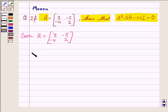Therefore, A squared is [3, -5; -4, 2] times [3, -5; -4, 2].